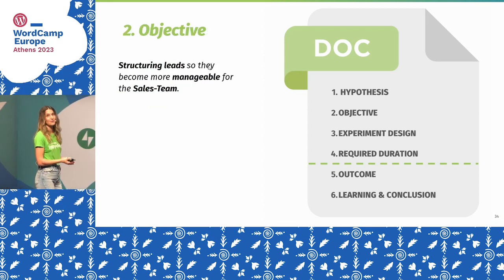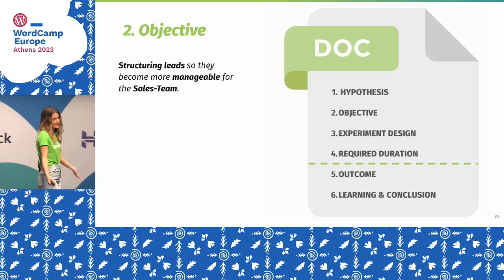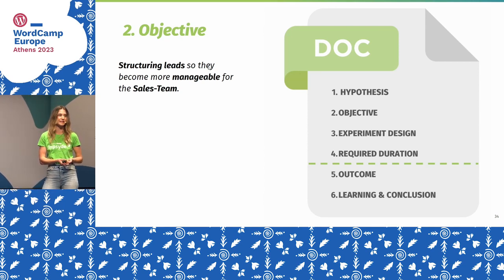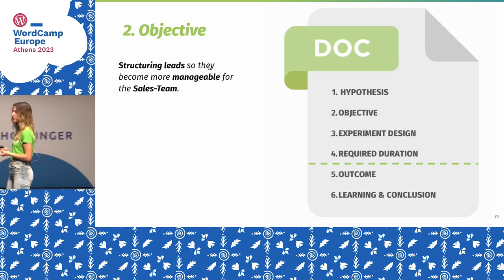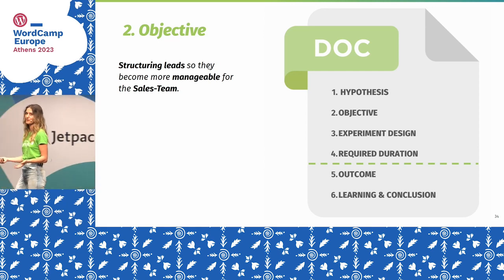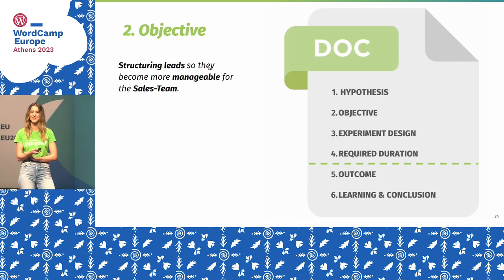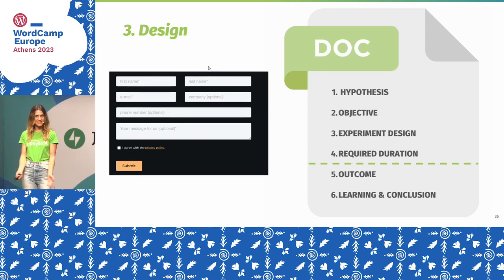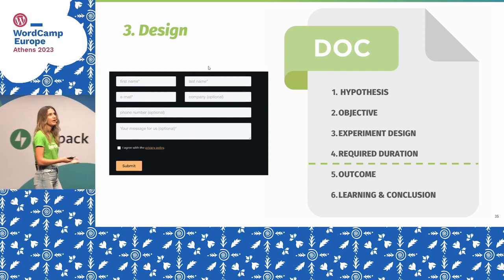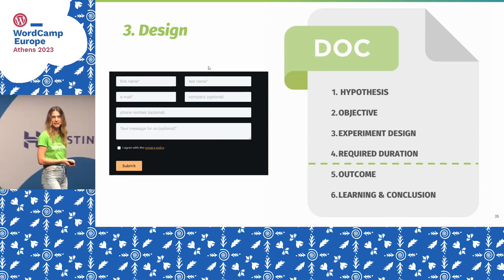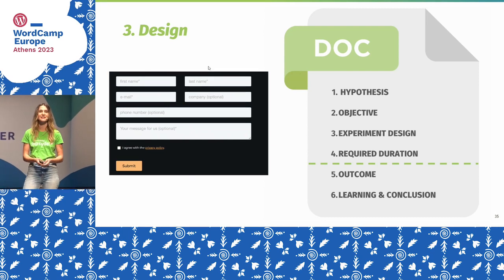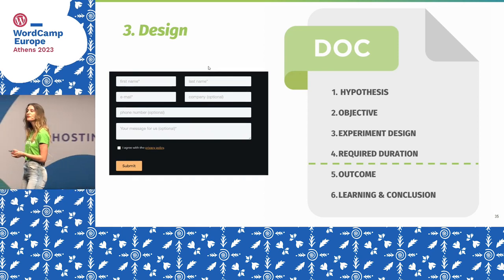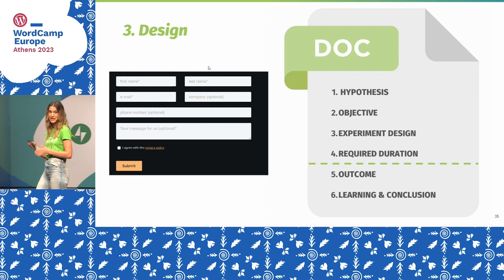Then we had the objective: why are we doing this? The sales team wanted to make their leads more manageable and structured. So you just write down the why. You also include the design — take a screenshot from a competitor if you see something nice and put it there. The pitch card is just a one-pager. It shouldn't be too much work — keep it short, snappy, and simple.